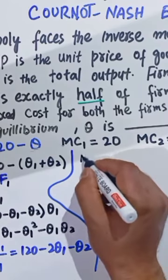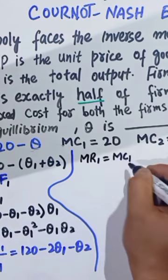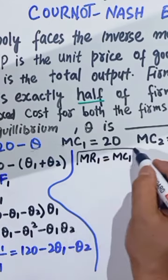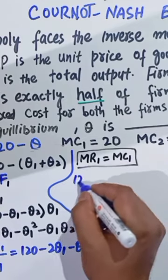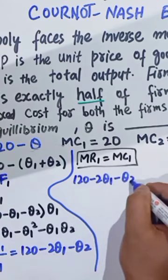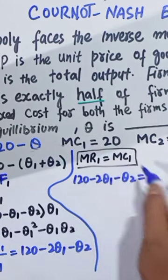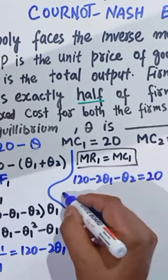Equilibrium requires marginal revenue one should be equal to marginal cost one. That means marginal revenue of firm one should be equal to marginal cost of firm one. Marginal revenue we calculated is 120 minus twice q1 minus q2. It should be equal to marginal cost which is being given as 20, so this becomes a hundred.